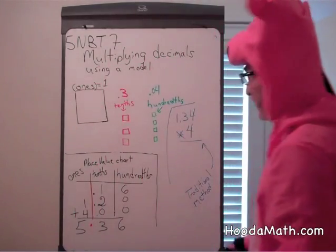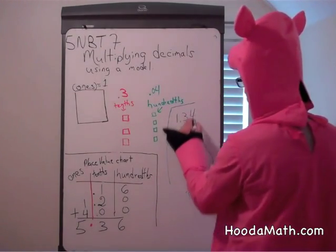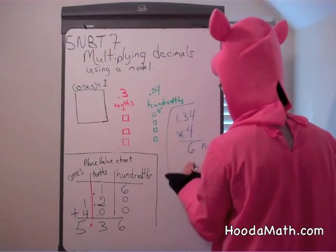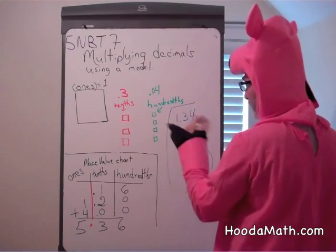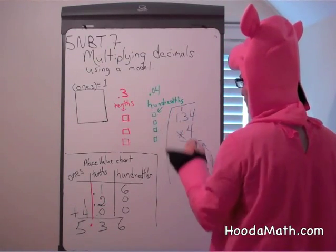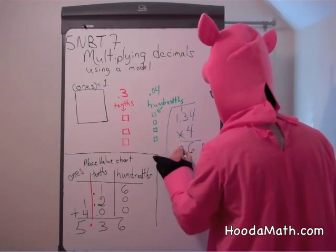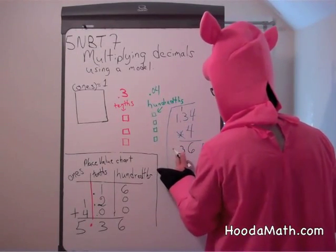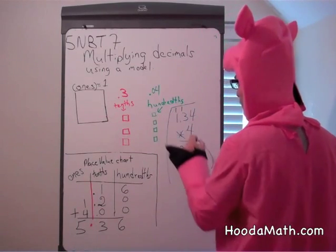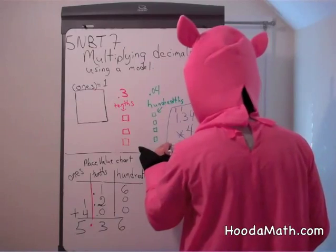Let's see how this works traditionally. Four times four is sixteen, and we would regroup — put one here. Four times three is twelve, and one more is thirteen. So we'd regroup, put a one here. Four times one is four, plus one is five.